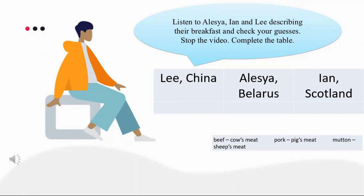I am Lee from China. For breakfast, I eat a bowl of noodles or a plate of rice with some fish or some meat — usually beef or pork — and a plate of vegetables. Sometimes it is simply a plate of vegetables when I need a quick breakfast. I also have a cup of good tea. I never drink milk.